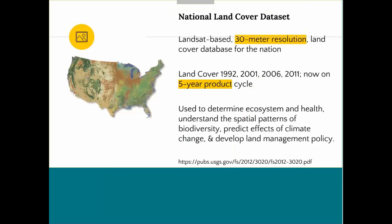We also have the National Land Cover Data Set, which you can also find in the National Map Viewer. It serves as a definitive land-based 30-meter resolution land cover database for the nation. It provides a spatial reference and descriptive data for characteristics of the land surface, such as thematic class — areas for urban development, agriculture, forest, and canopy cover. You can also find out the percentage of change that has happened over time, and this is used to determine ecosystem health, understand the effects of climate change, and develop land management policy.